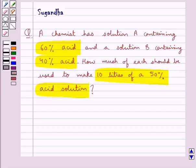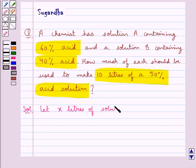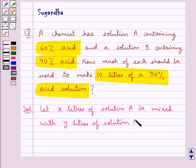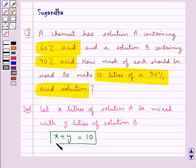In this question we need to find the amount of solution A and solution B that need to be mixed to make 10 litres of a 50% acid solution. Let x litres of solution A be mixed with y litres of solution B. This means x plus y is equal to 10. Let this be equation 1.